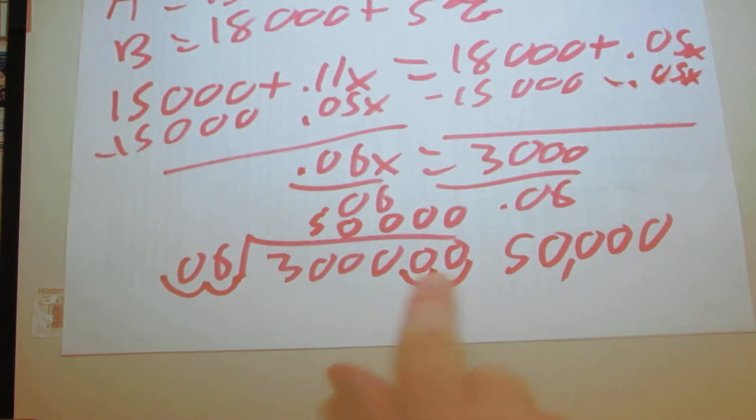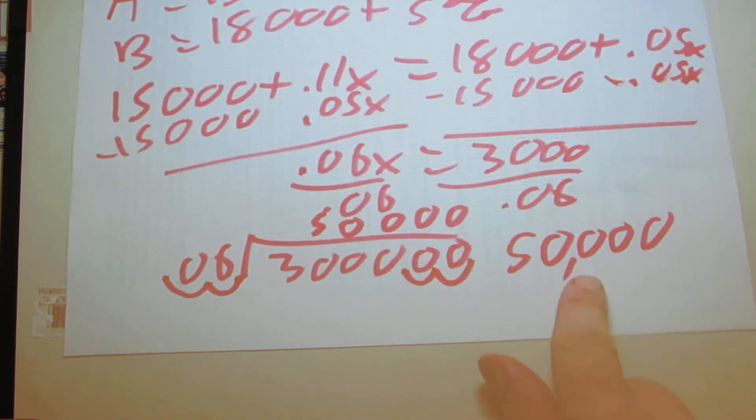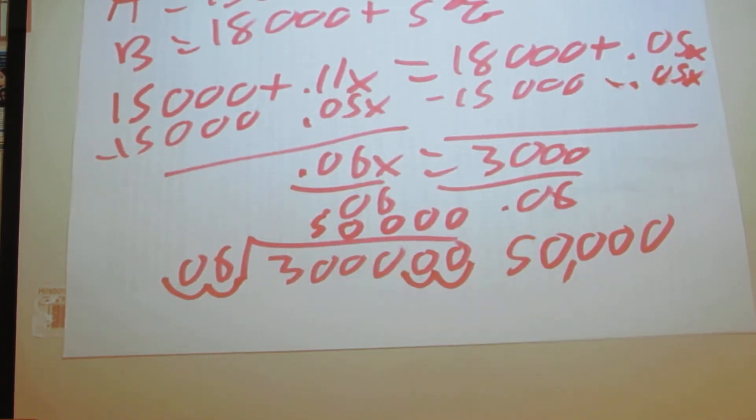Six goes into 300,000 fifty thousand times. So in option A, if the person sells $50,000 worth of the product, then he'll make the same amount as with the lower base salary.